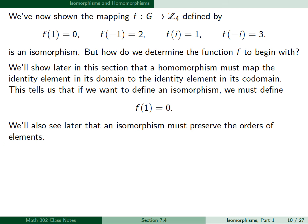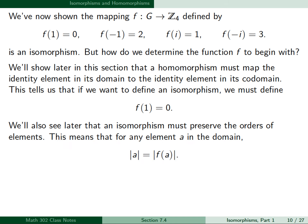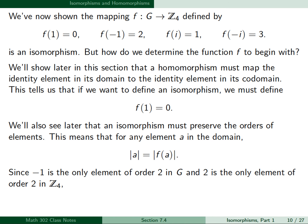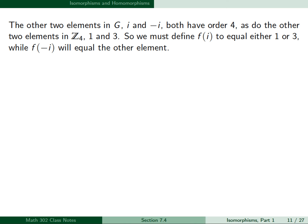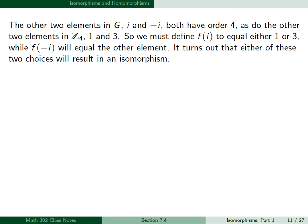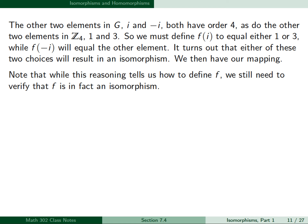We'll also see later that an isomorphism must preserve the orders of elements: for any element a in the domain, the order of a must equal the order of f(a). Since -1 is the only element of order 2 in G, and 2 is the only element of order 2 in Z4, we must define f(-1) = 2. The elements i and -i both have order 4, as do 1 and 3 in Z4, so f(i) must equal either 1 or 3. Either choice results in an isomorphism, but we still need to verify that f is in fact an isomorphism.